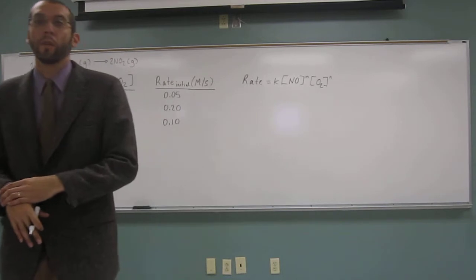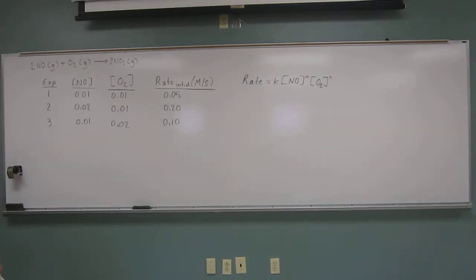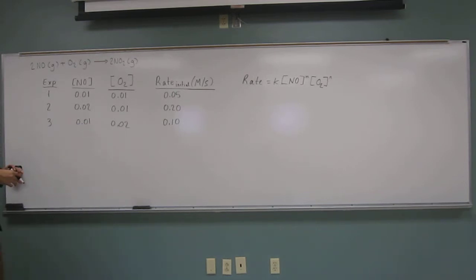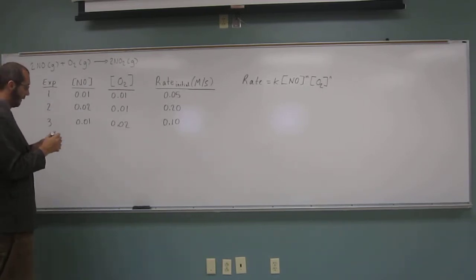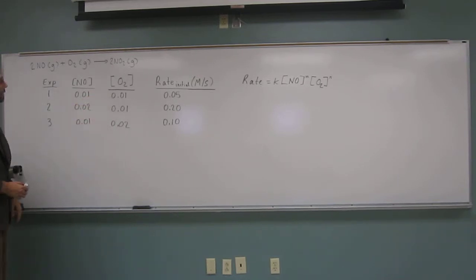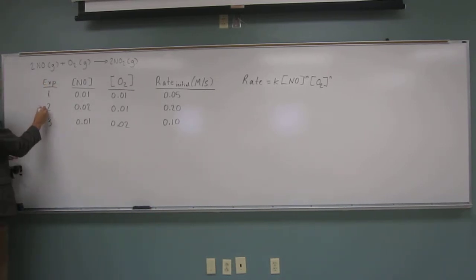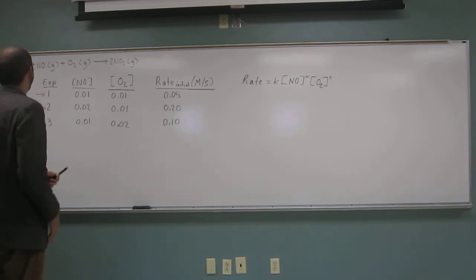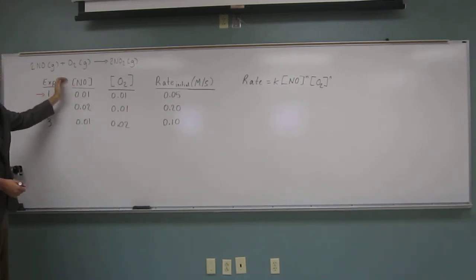It also wants us to determine the rate order of the entire reaction itself. To do this, I have to find experiments where the concentration of one reactant changes but the other stays the same. For nitrogen monoxide, we see experiments 2 and 1 where it changes but oxygen's concentration doesn't change. Those would be the ones we'd use for NO.